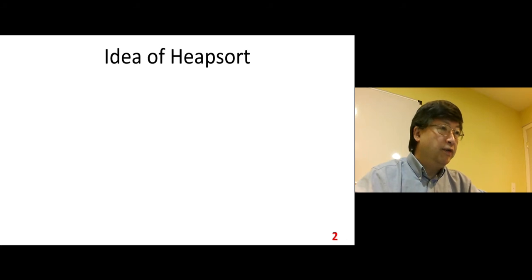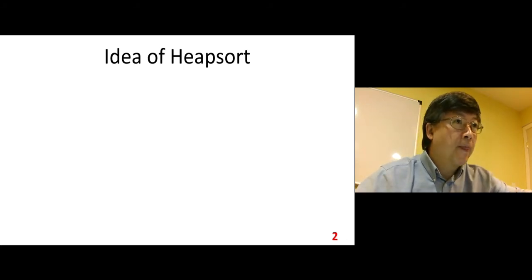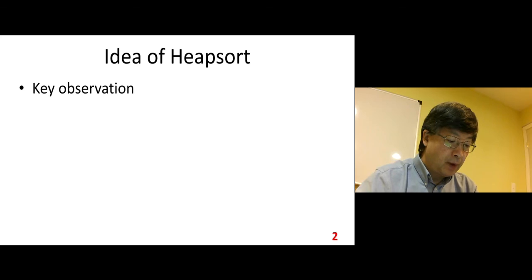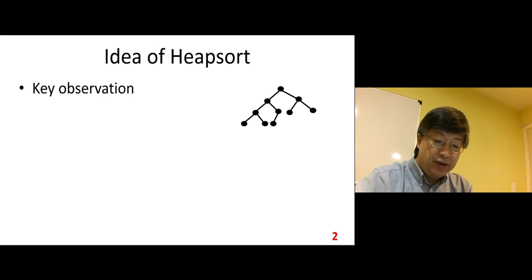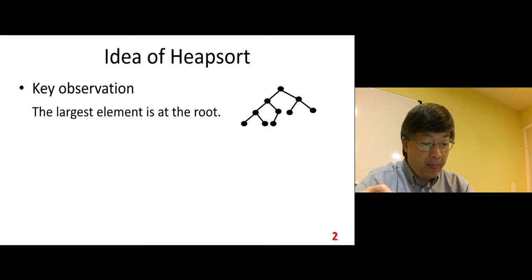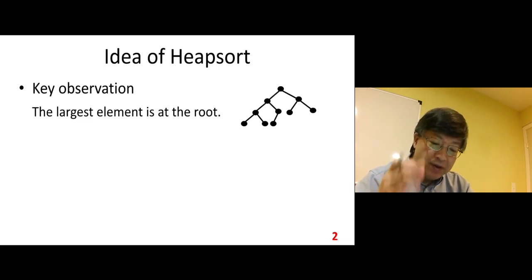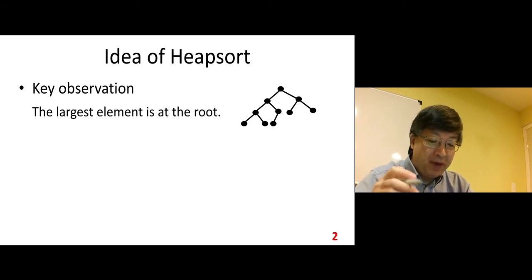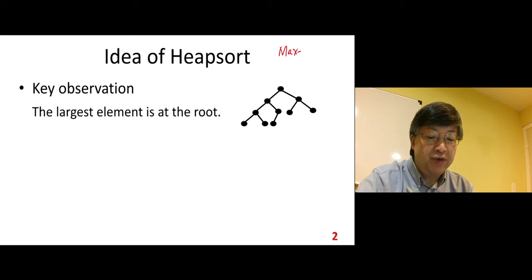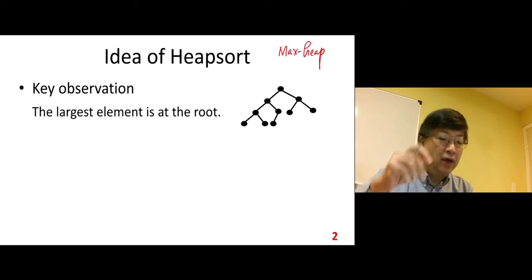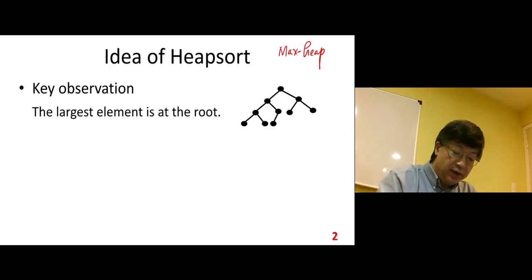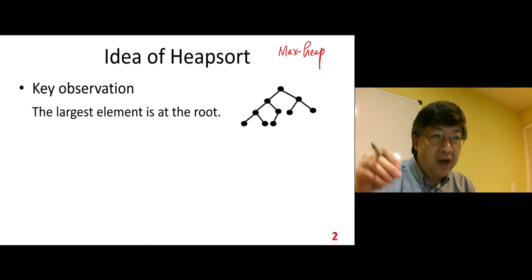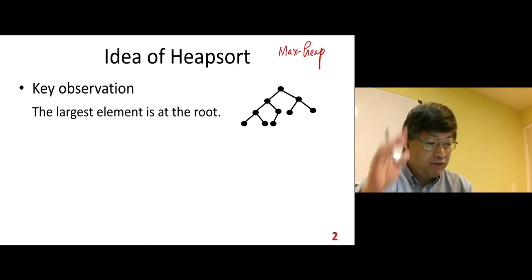First let's look at the idea of heap sort and do some key observations. There is a property we want to find. So look at a typical heap like this. First, suppose this is a heap — we know the largest element. So here we assume max heap. By default we assume we use a max heap, and for the min heap it's similar so we can convert it easily. So let's just look at a max heap.